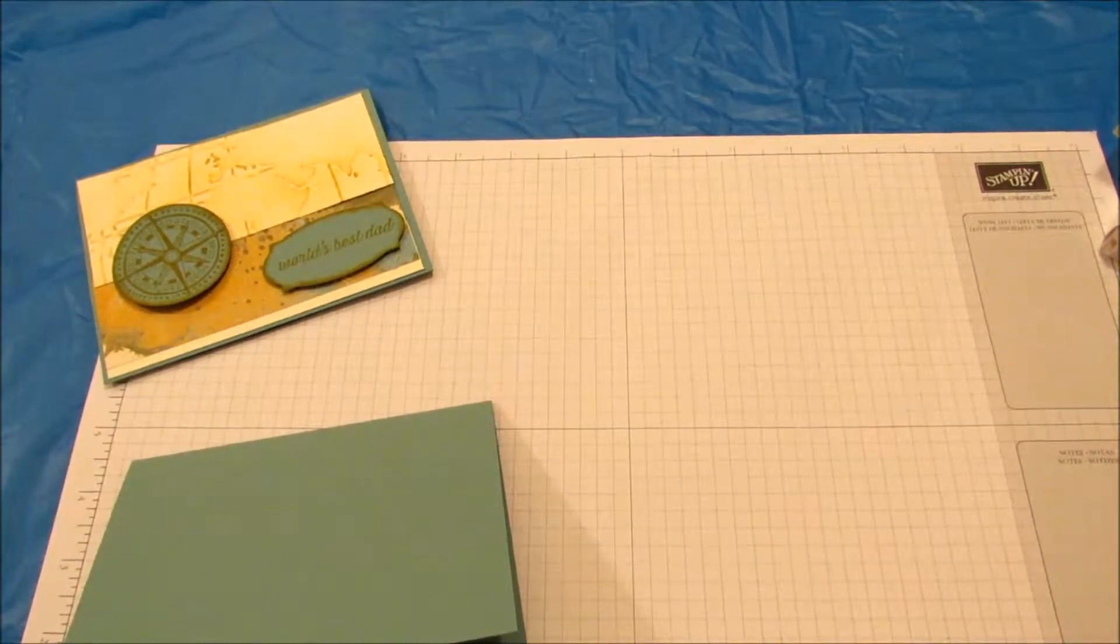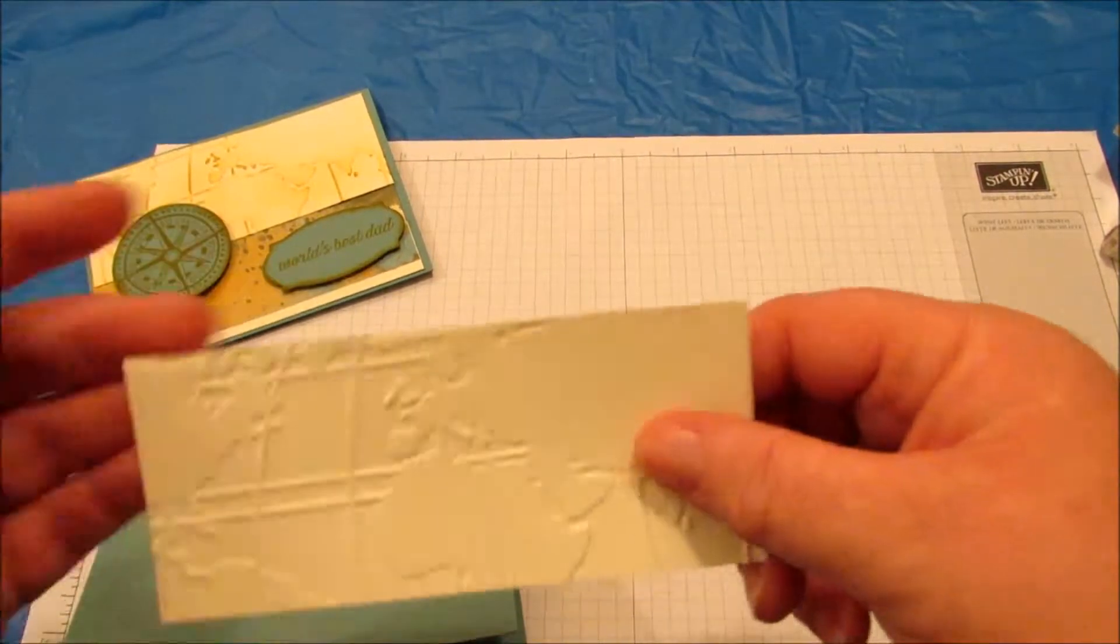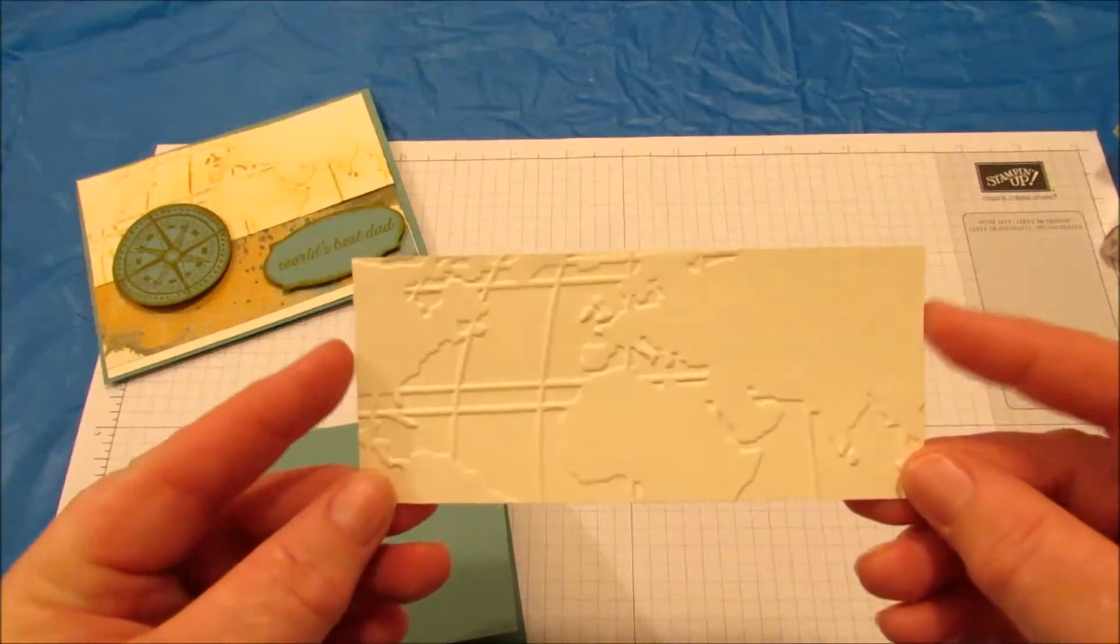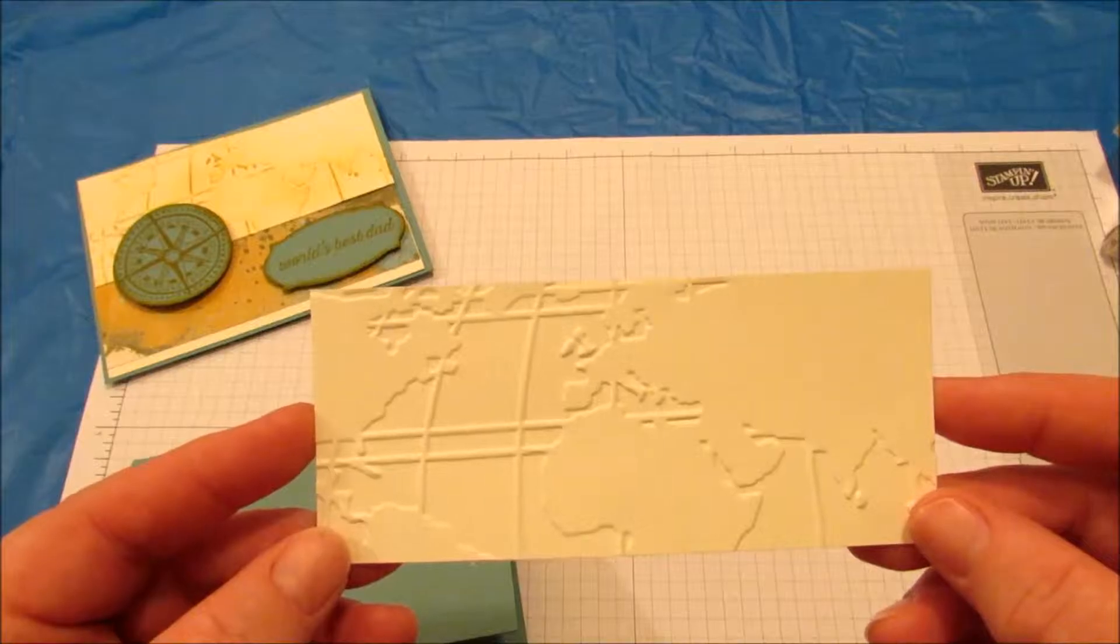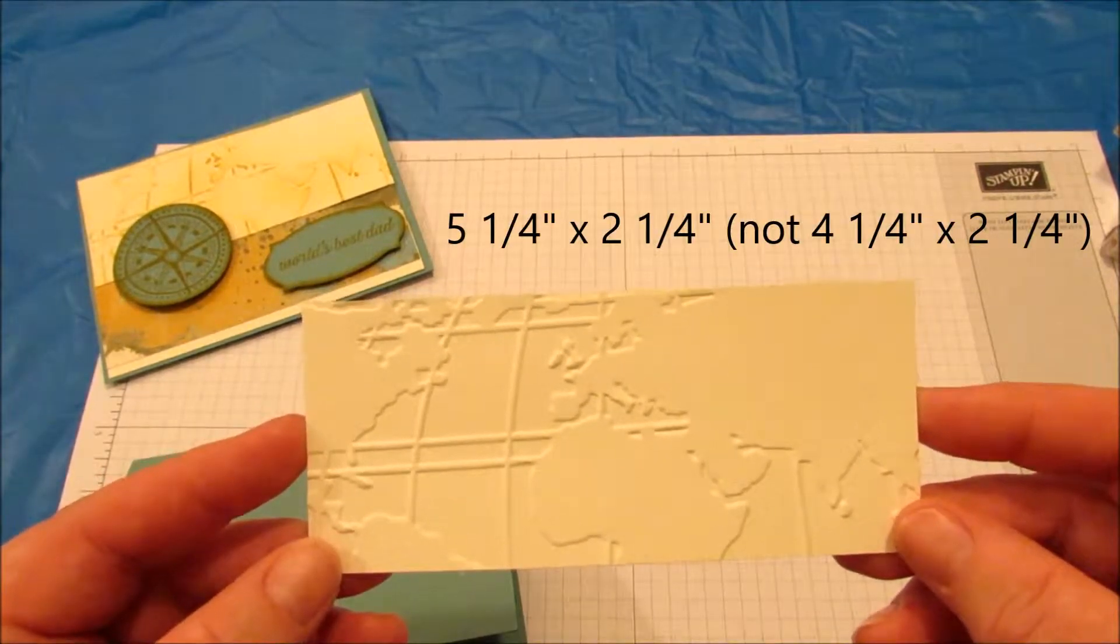I have Sahara Sand paper which I did the embossing folder on and that is four and a quarter inches by two and a quarter inches.